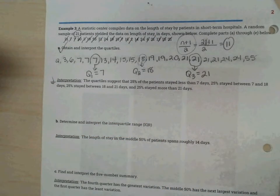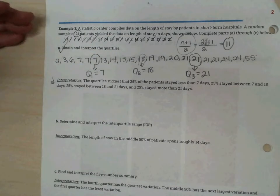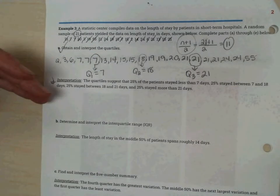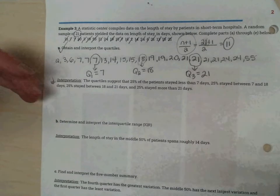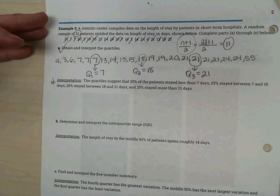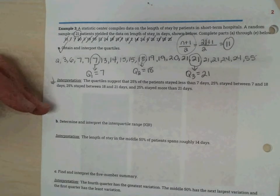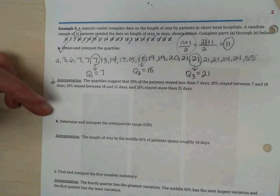Now, this is somewhat new to us: to interpret what we just wrote in the context of the question. I just wrote those out for you. Can you read, Ganesh, the interpretation for example 3, part A? The report suggests that 25% of patients stayed less than seven days, 25% stayed between seven and 18 days, 25% stayed between 18 and 21 days, and 25% stayed more than 21 days. Excellent, thanks.